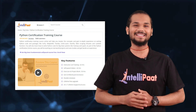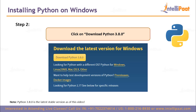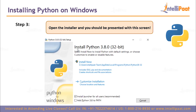So step two is to click on the download, which we just did. As of this video being made, Python 3.8.0 is the latest stable version available. That brings us to step three — opening the installer. We should be presented with the installation screen, so let's wait for the download to complete and then open up the installation box.